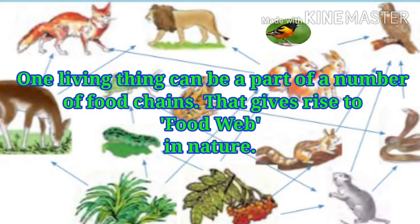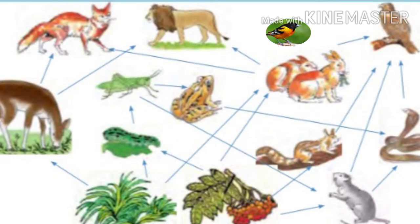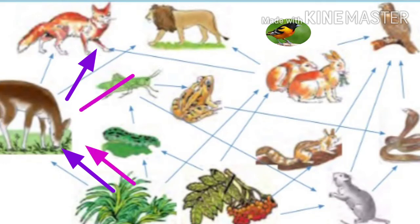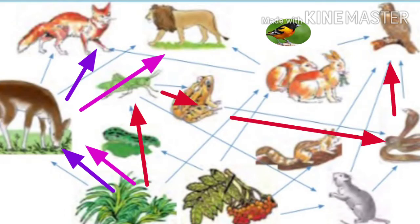The food web. One living thing can be a part of a number of food chains. That gives rise to a food web in nature. Let's observe the various food chains shown in this picture. Plant is food for deer and deer is food for fox. Plant is food for deer and deer is food for lion. Plant is food for grasshopper, grasshopper is food for frog, frog is food for snake, and snake is food for eagle.